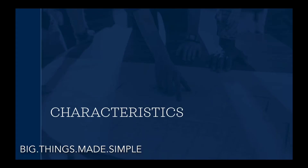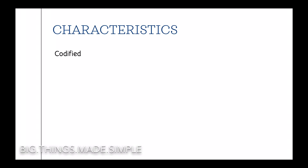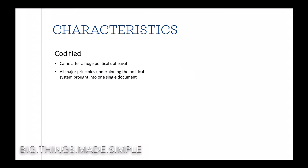Characteristics of a constitution generally refers to the various forms of a constitution. A codified constitution usually came after a huge political upheaval, like the US after its independence and France after World War II. In a codified constitution, all major principles underpinning the political system are brought into one single document, like the US constitution. There is also the presence of fundamental or higher laws, which are laws made deliberately hard to amend to protect the rights of the people, such as the first ten amendments in the US constitution.